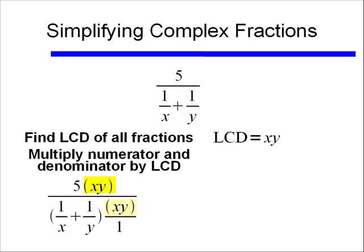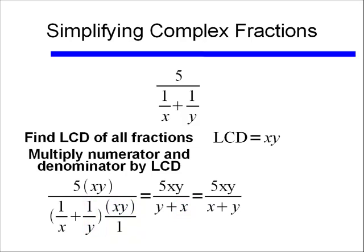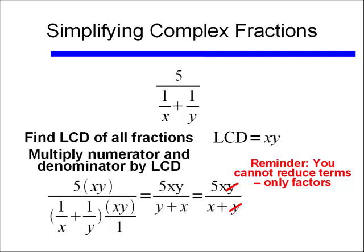I'm multiplying my numerator by x times y and my denominator by x times y. So my numerator is 5xy. In the denominator, if I multiply xy times 1 over x, that leaves behind a y, and multiplying xy by 1 over y, I get x. I would write this as 5xy divided by x plus y. Remember, even if you're tempted to cancel out those y's, you can only reduce factors — you cannot reduce terms. If there's a plus sign there, you're stuck. So our final answer is 5xy divided by x plus y.